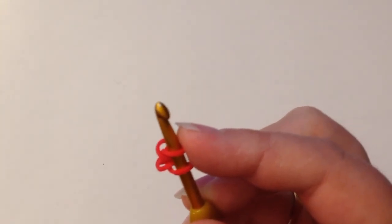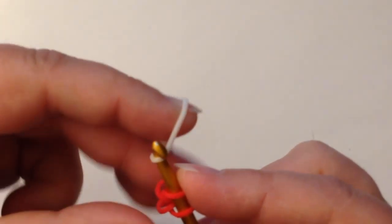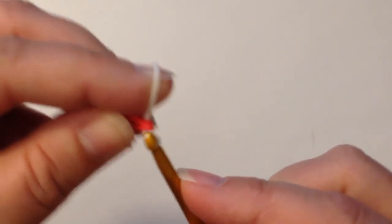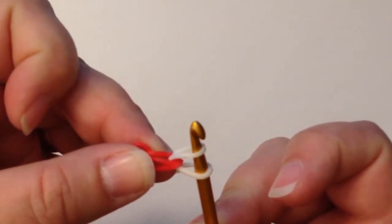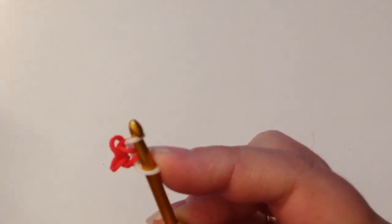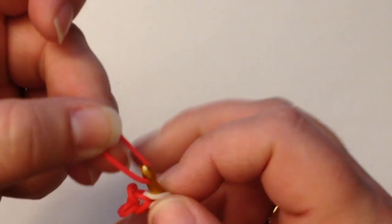Okay, and then all you do, I'm going to alternate colors, is just pull that little band through. Now you can do it the way I just did it, or you can do it this way where you move it across like that.